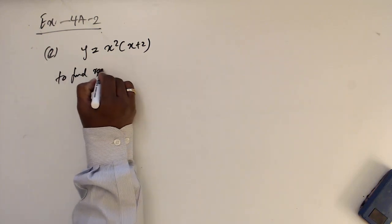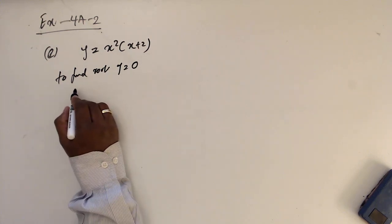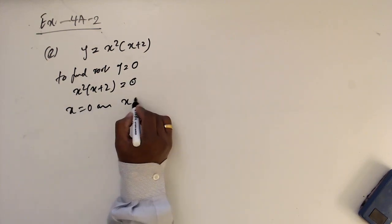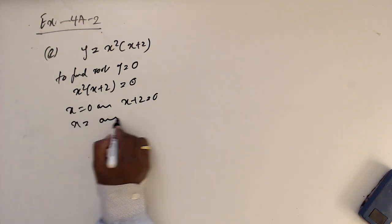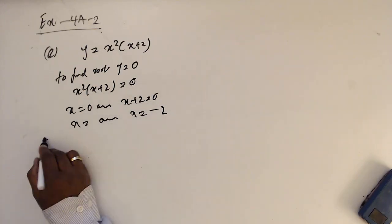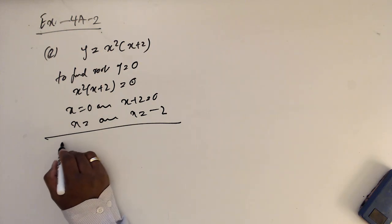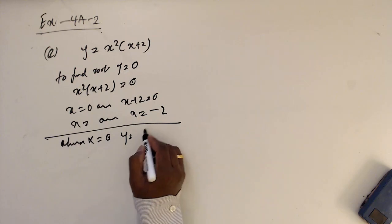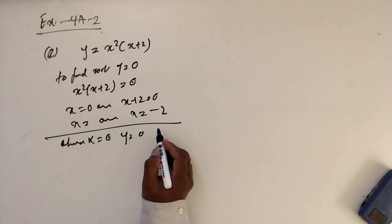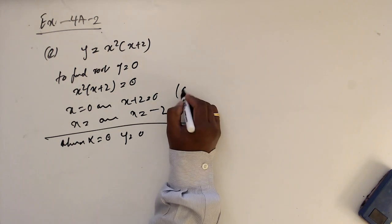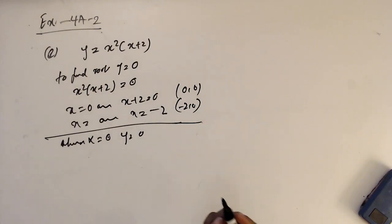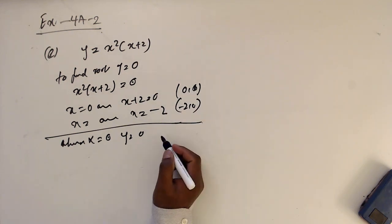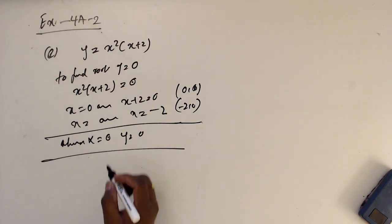To find roots, set y equal to 0: x squared times (x+2) equals 0. Then x equals 0 or x+2 equals 0, giving x equals 0 or x equals minus 2. The points are (0, 0) and (minus 2, 0). We don't need to check when x equals 0 separately because we already know y equals 0 there.